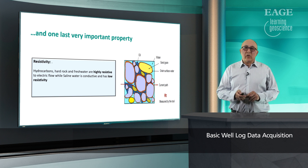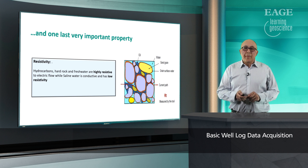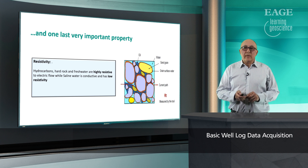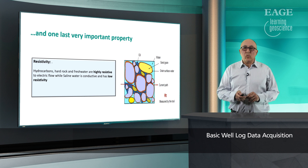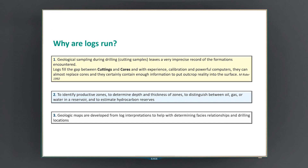So hydrocarbons, hard rock, and fresh water are highly resistive to electric flow, while saline water is conductive and has low resistivity. This concept is very important for petrophysicists and to get a good water saturation.